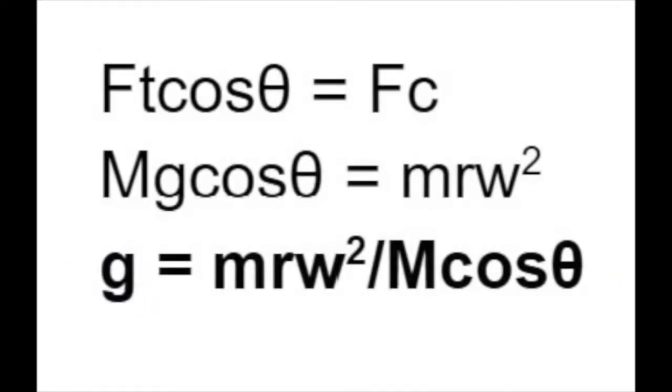Using this concept, we can derive our equation. We write that the horizontal component of tension equals the centripetal force. We write the centripetal force as the mass of the phone times the radius times the angular velocity squared. We can also write the tension force as big M times gravity. We move the variables around to get the equation gravity equals mass of the phone times the radius of the circular motion times angular velocity squared divided by big M times cos theta.